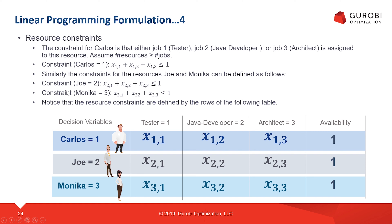The other resource constraints follow the same pattern. For each resource we have one constraint, with the resource defined by the first index. For Joe (first index always 2): X_21 + X_22 + X_23 ≤ 1, since it is possible Joe might not be assigned. For Monica (first index 3): X_31 + X_32 + X_33 ≤ 1, since Monica may also not be assigned. Each constraint corresponds to a row of the resource table.